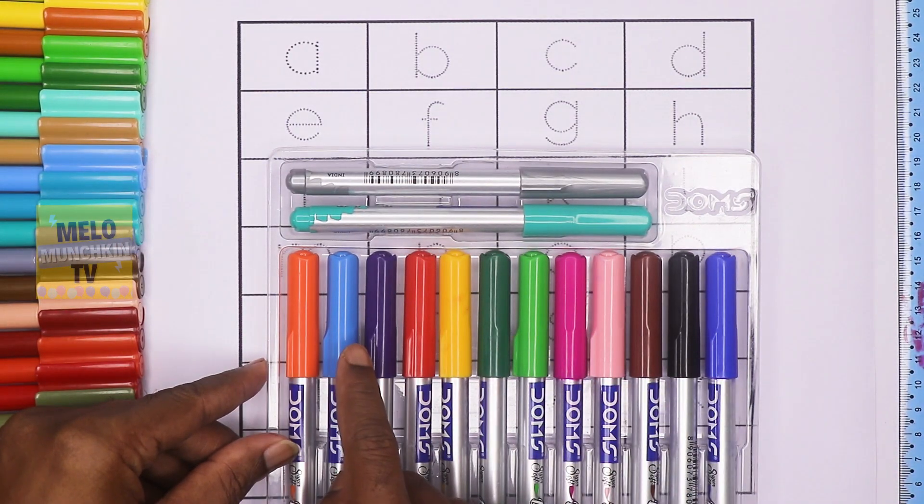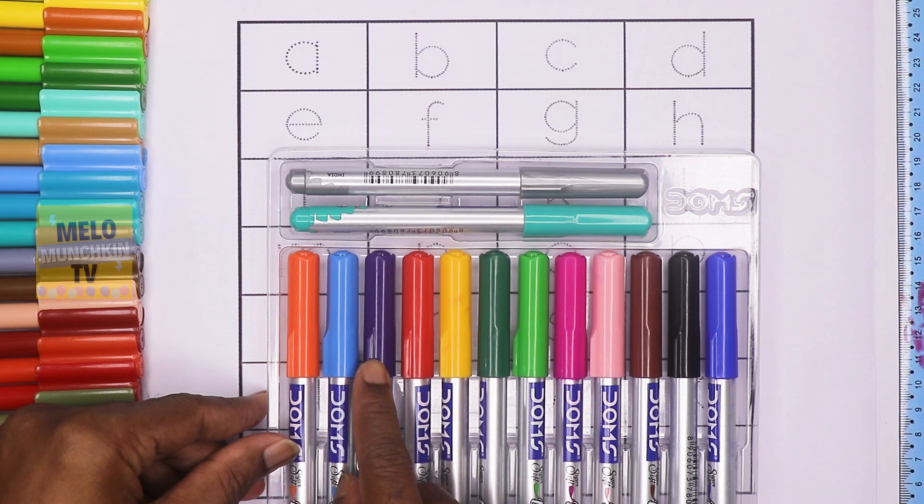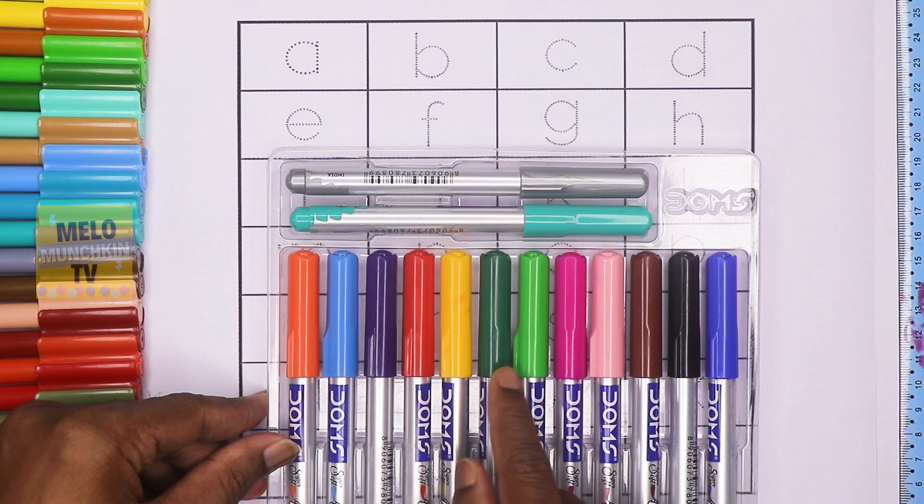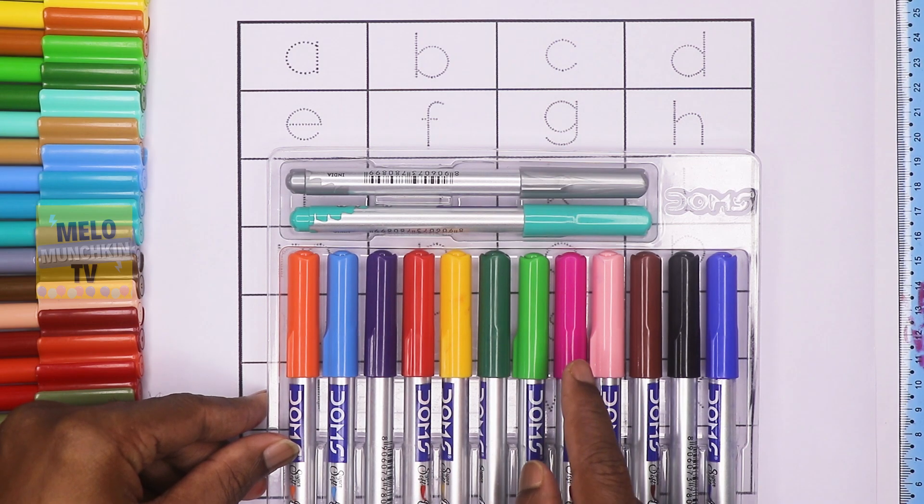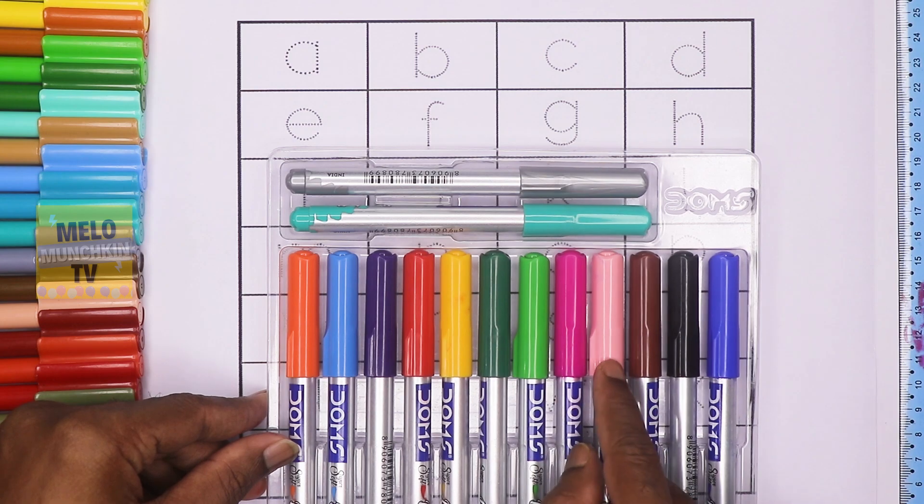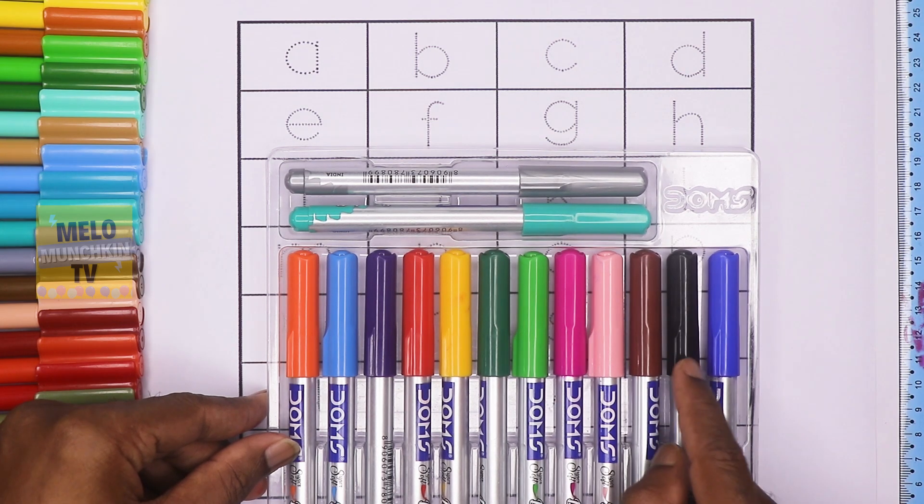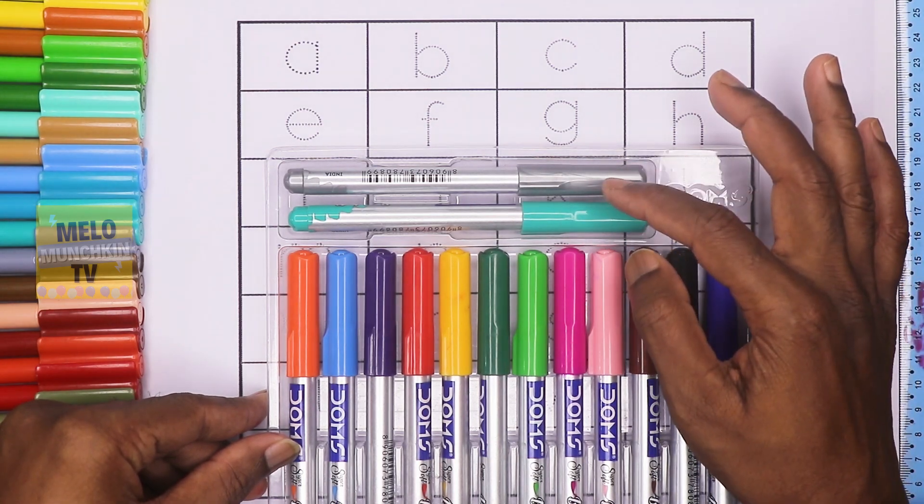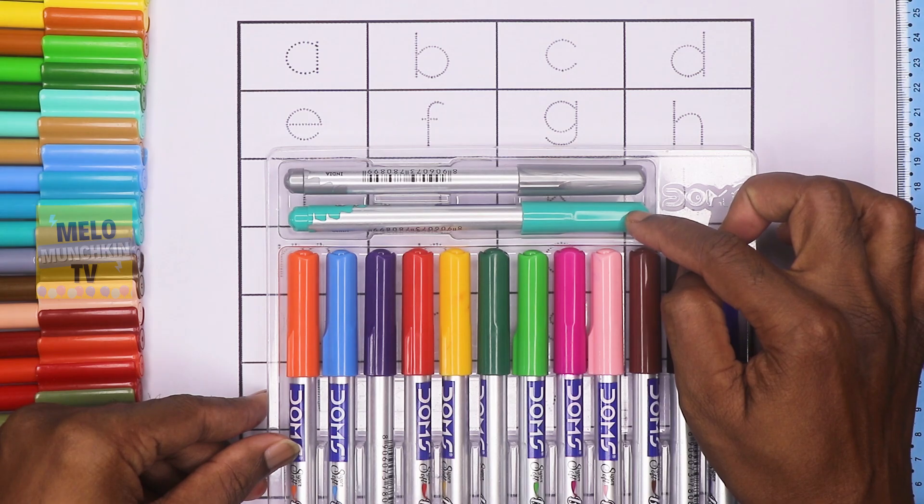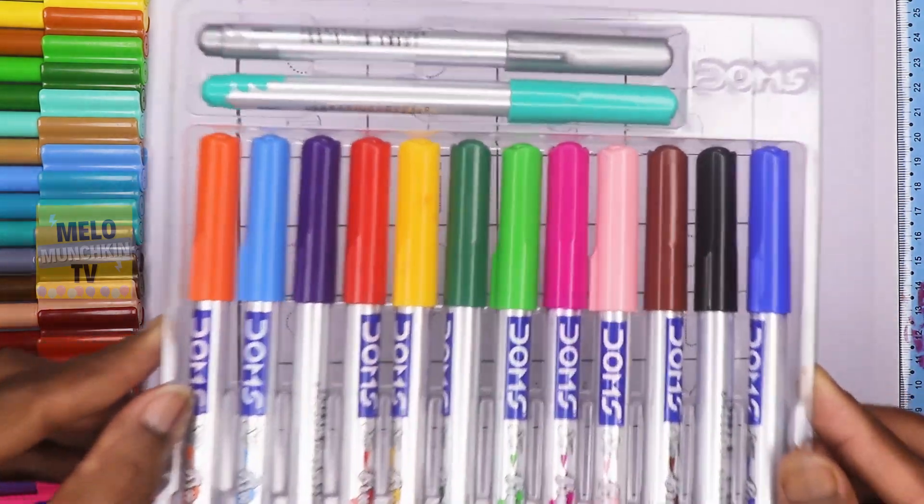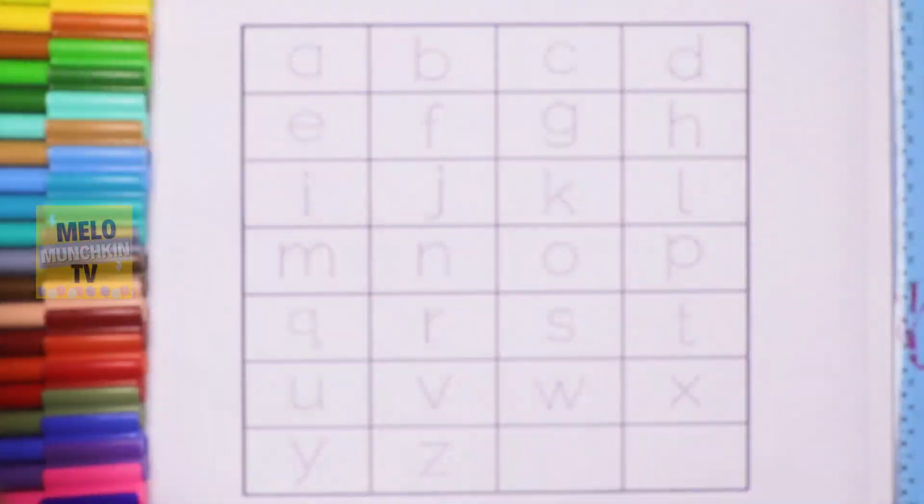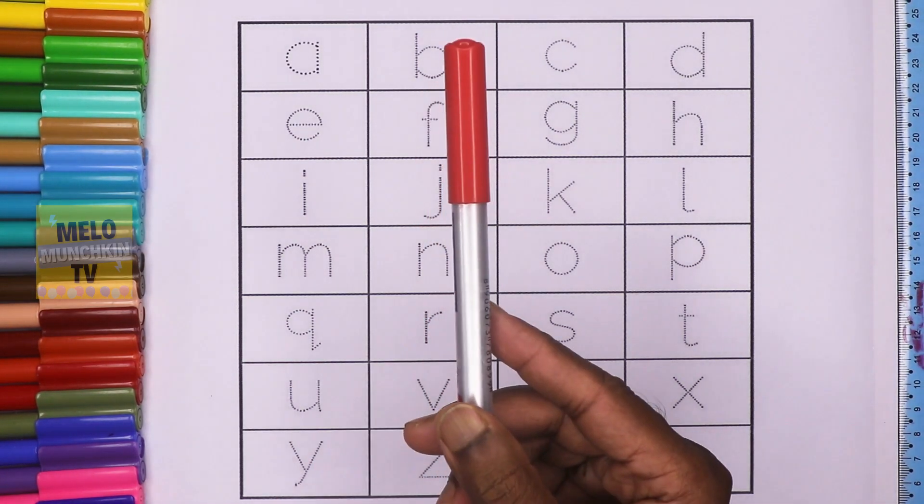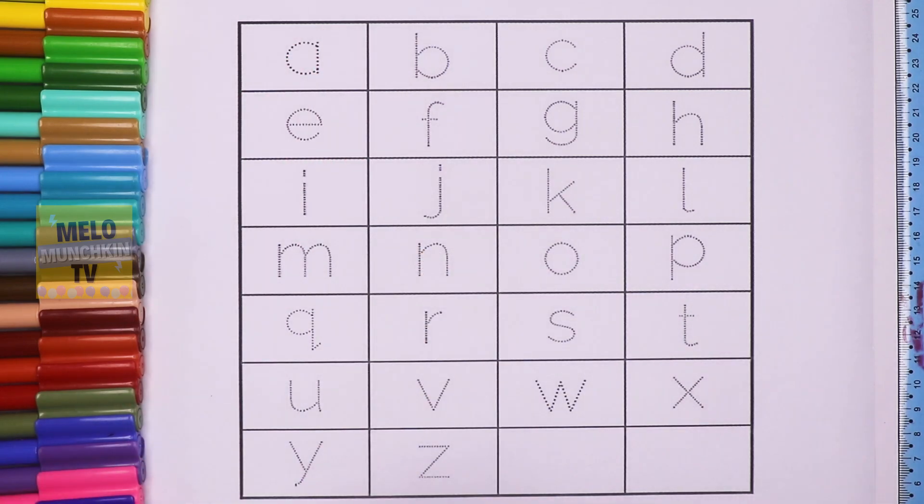Orange, blue, purple, red, yellow, dark green, light green, dark pink, light pink, brown, black, and dark blue. These are extras: gray color and green is blue. So first we'll start with a red color.